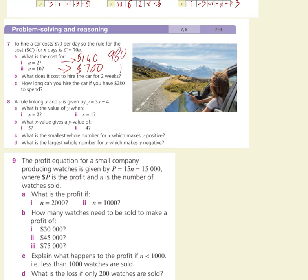How long can you hire the car for if you've got $280? 280 divided by 70 is the same as 28 divided by 7, which is 4 days. For the next question, a rule linking x and y is given by y equals 3x minus 4. When x equals 2: 3 times 2 is 6, take 4 is 2.